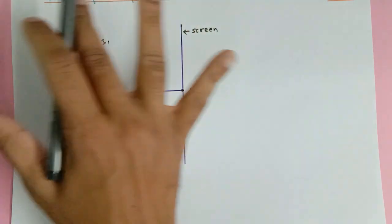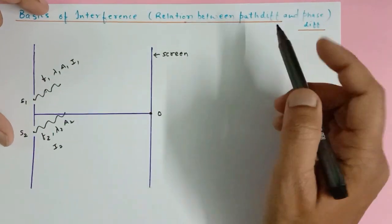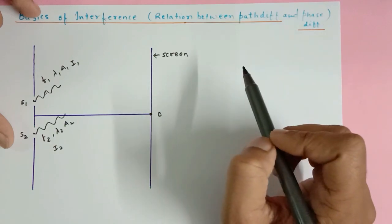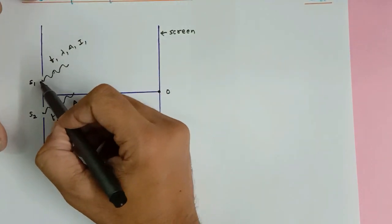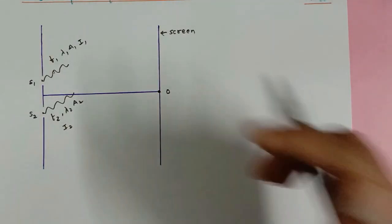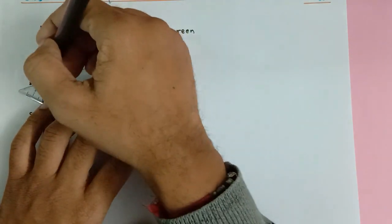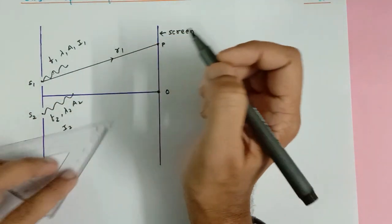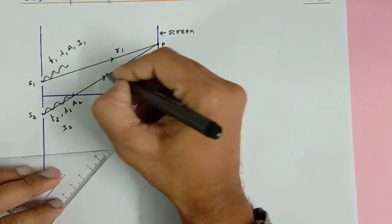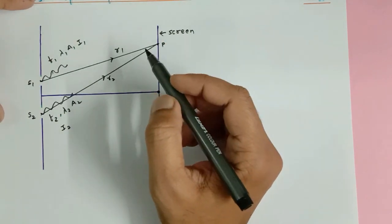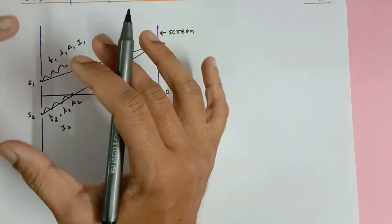Right now our focus is to understand what is happening here, what is formed, and these wave equations — and as the heading states, the relationship between path difference and phase difference. In the next video you will find what is path difference and its expression. The wave from S1 reaches point P traveling a distance R1, and from S2 the second wave travels a distance R2 to reach point P — so there would be some path difference and phase difference. Don't consider these as heavy terms; we will understand them very easily.